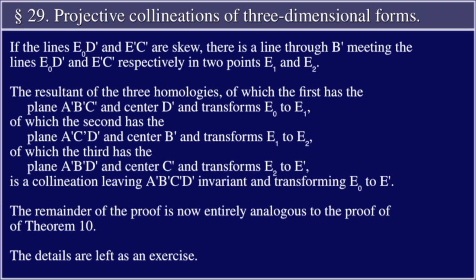If the lines E0 D prime and E prime C prime are skew, there is a line through B prime meeting the lines E0 D prime and E prime C prime respectively in two points E1 and E2. The resultant of the three homologies, of which the first has the plane A prime, B prime, C prime and center D prime and transforms E0 to E1, of which the second has the plane A prime, C prime, D prime and center B prime and transforms E1 to E2, and of which the third has the plane A prime, B prime, D prime and center C prime and transforms E2 to E prime,